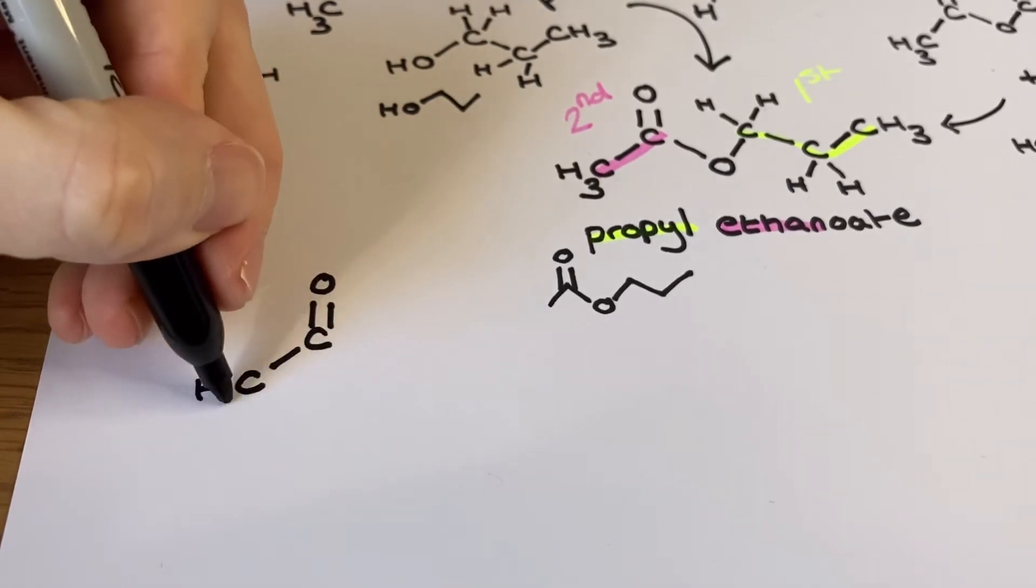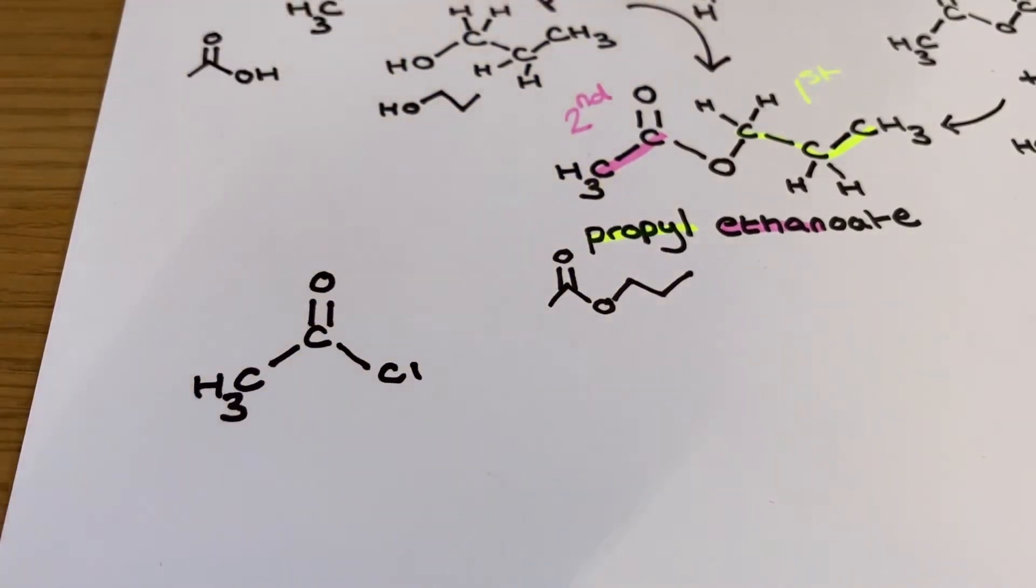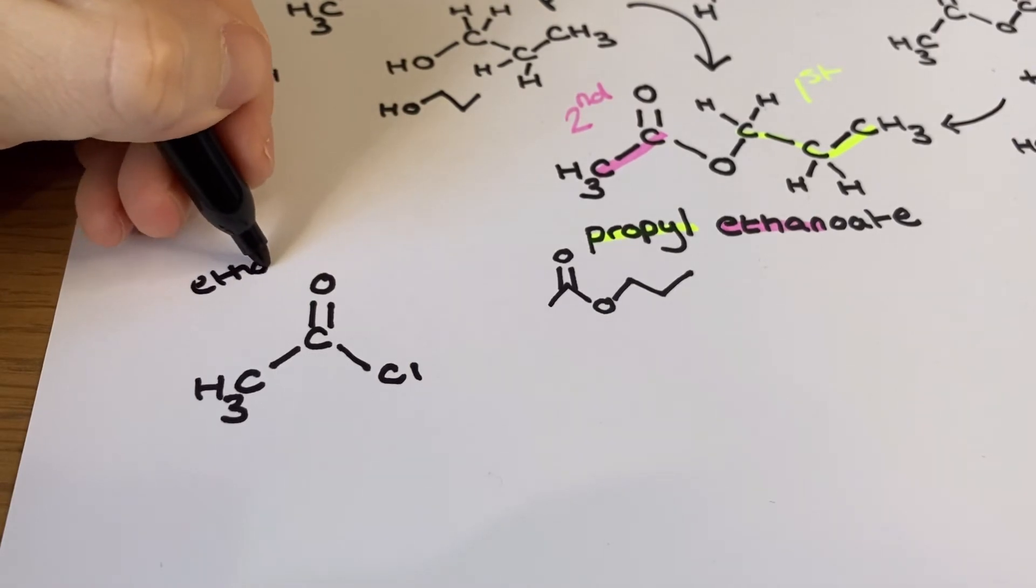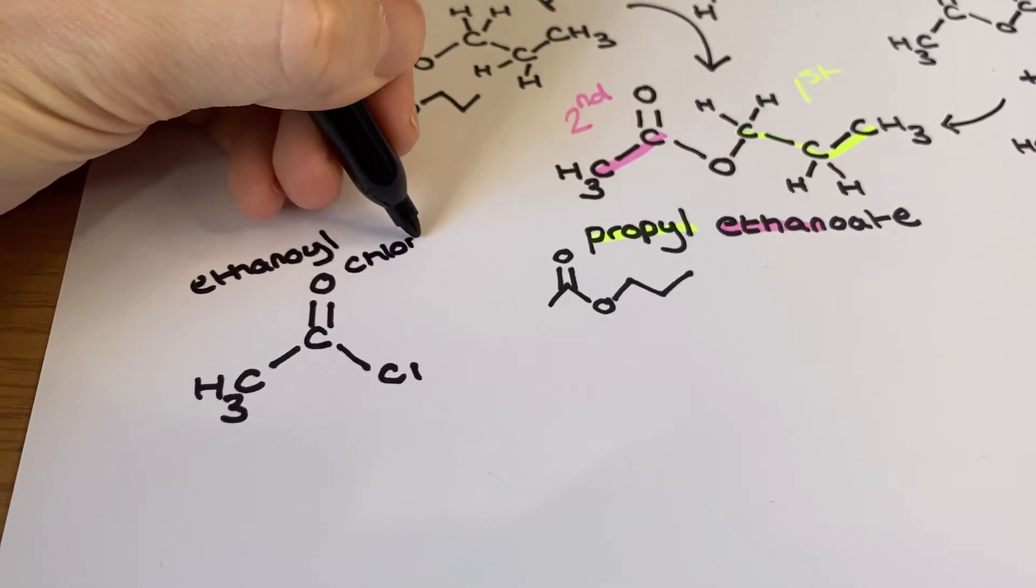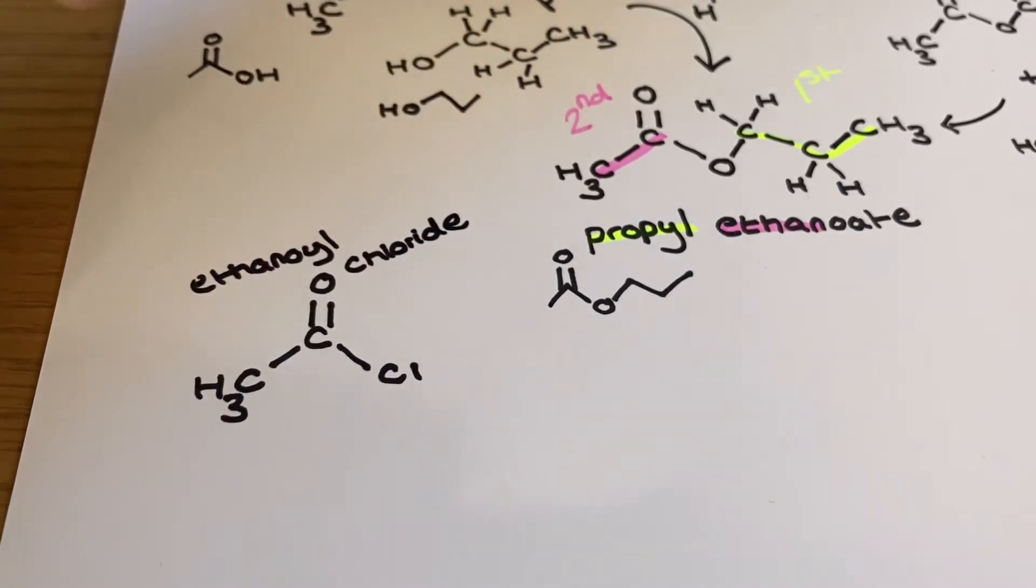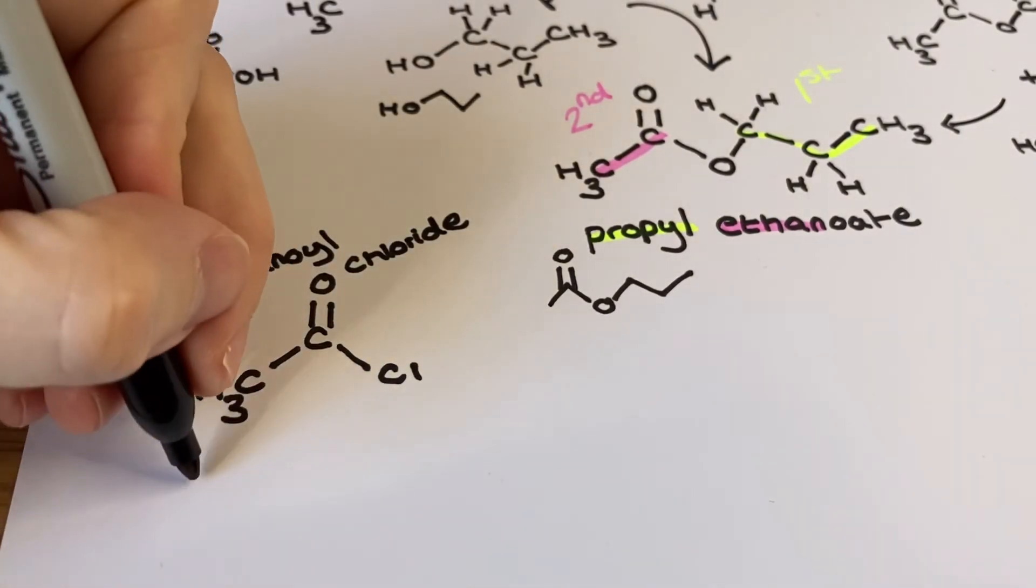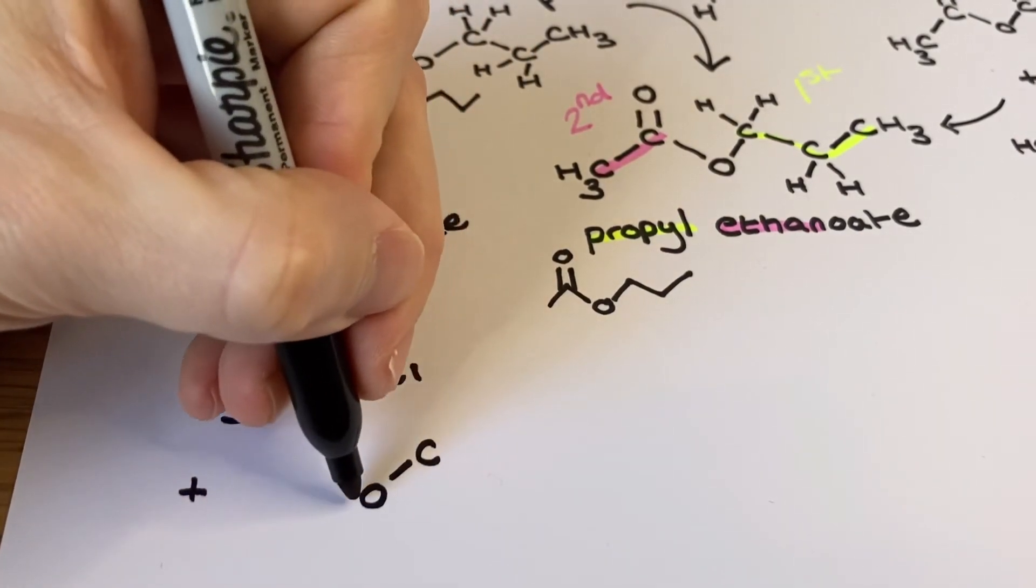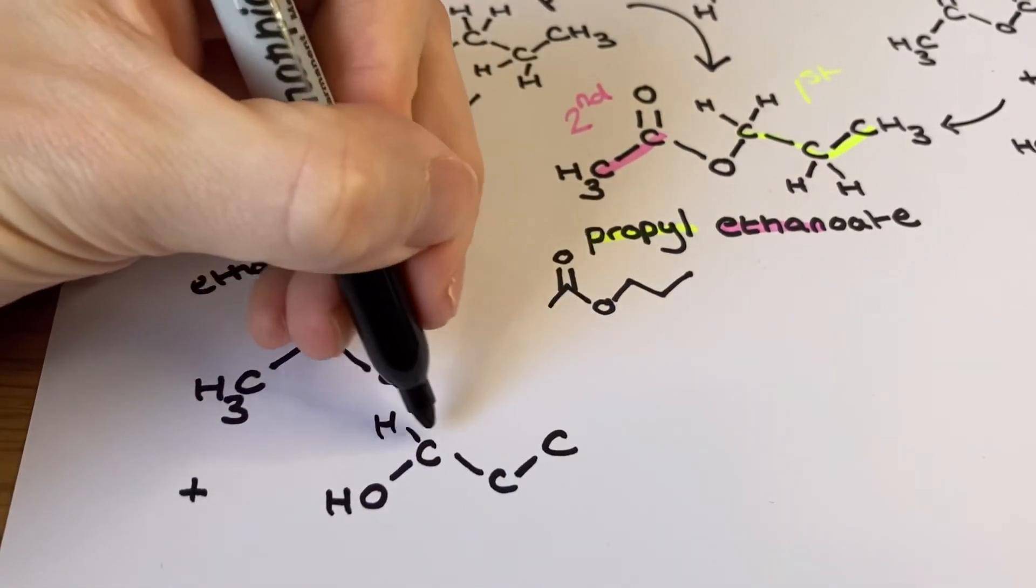A third way to make the ester is by using something called an acyl chloride and then the same alcohol of propan-1-ol once again. Hopefully you can see a pattern forming here. An acyl chloride like this ethanoyl chloride resembles a carboxylic acid and can actually be synthesized from one, except the OH is replaced by a Cl. Like the anhydride, this acyl chloride named ethanoyl chloride will react with the alcohol without the use of a catalyst.